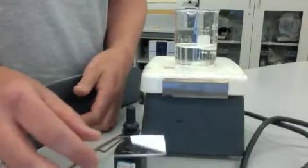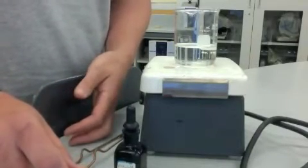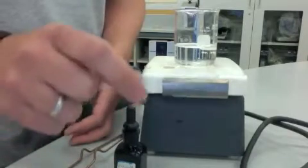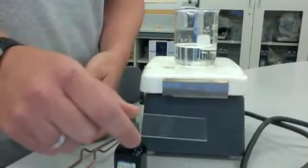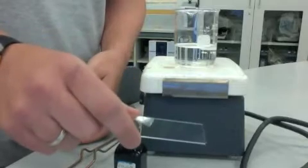The procedure for spore staining starts out exactly the same as for gram staining. You put your sample on in a little puddle of water, spread it out, dry it, and heat fix it.